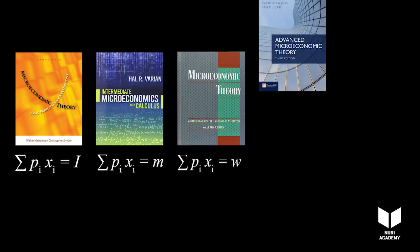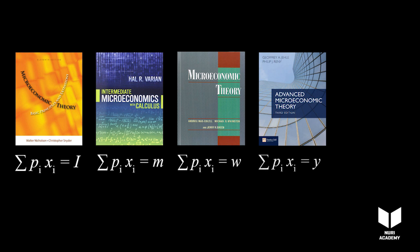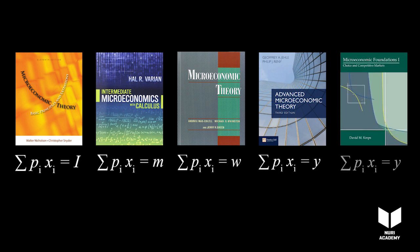MWG, a graduate textbook, uses W for wage. While other graduate textbooks like Jelinek Rennie or Kreps use Y. Don't ask me for what.